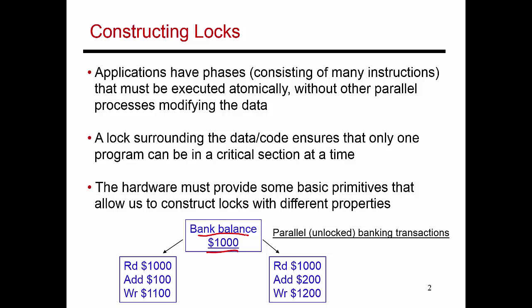The first thread reads the value of the current bank balance. At the same time, the wife is also depositing something at the ATM — her thread also starts doing a read to find out what the current bank balance is. Once those values have been fetched into registers, since you're depositing $100 in one case and $200 in the second case, you do some register math to figure out that the new bank balance is now $1,100 in one case and $1,200 in the second case. Then the thread ends by writing this register value into the variable which holds the bank balance.